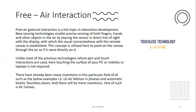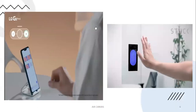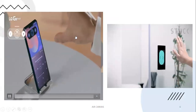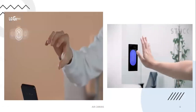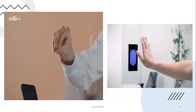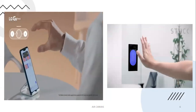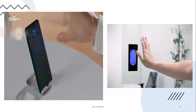Unlike most previous technologies where pen and touch interactions require touching the surface of your PC or mobile, that is not required here at all. We are not the ones who invented or innovated this concept in the first place — there have also been many inventions in this field of AI. For example, on the left side you can see LG Air Motion, and on the right side a kinetic automatic door pointer. Both of these are examples of touchless technologies, and AIR Canvas is also an example of touchless technology. Free AIR interaction is based everywhere.